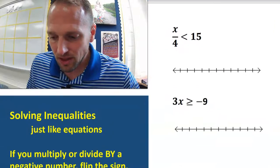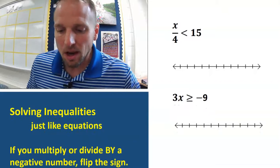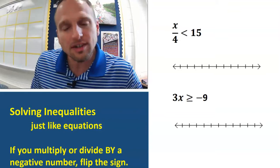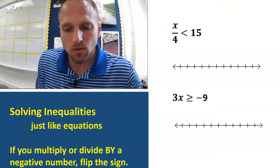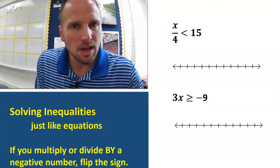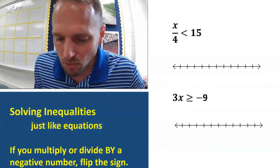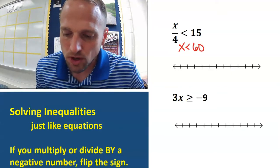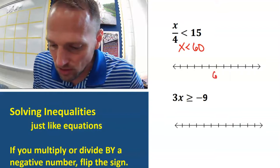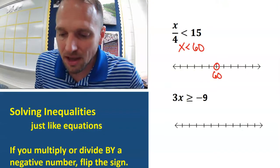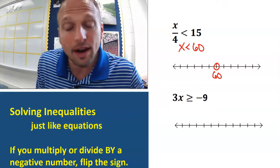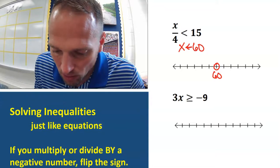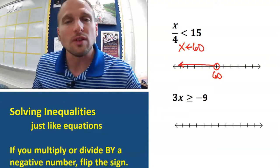Next: X divided by 4 is less than 15. To get rid of a divide, we multiply — so multiply both sides by 4. We get X is less than 60. Come over, make a mark at 60 — that's going to be an open circle. Imagine the inequality sign as an arrow pointing to the left, so the arrow on the number line also points to the left.